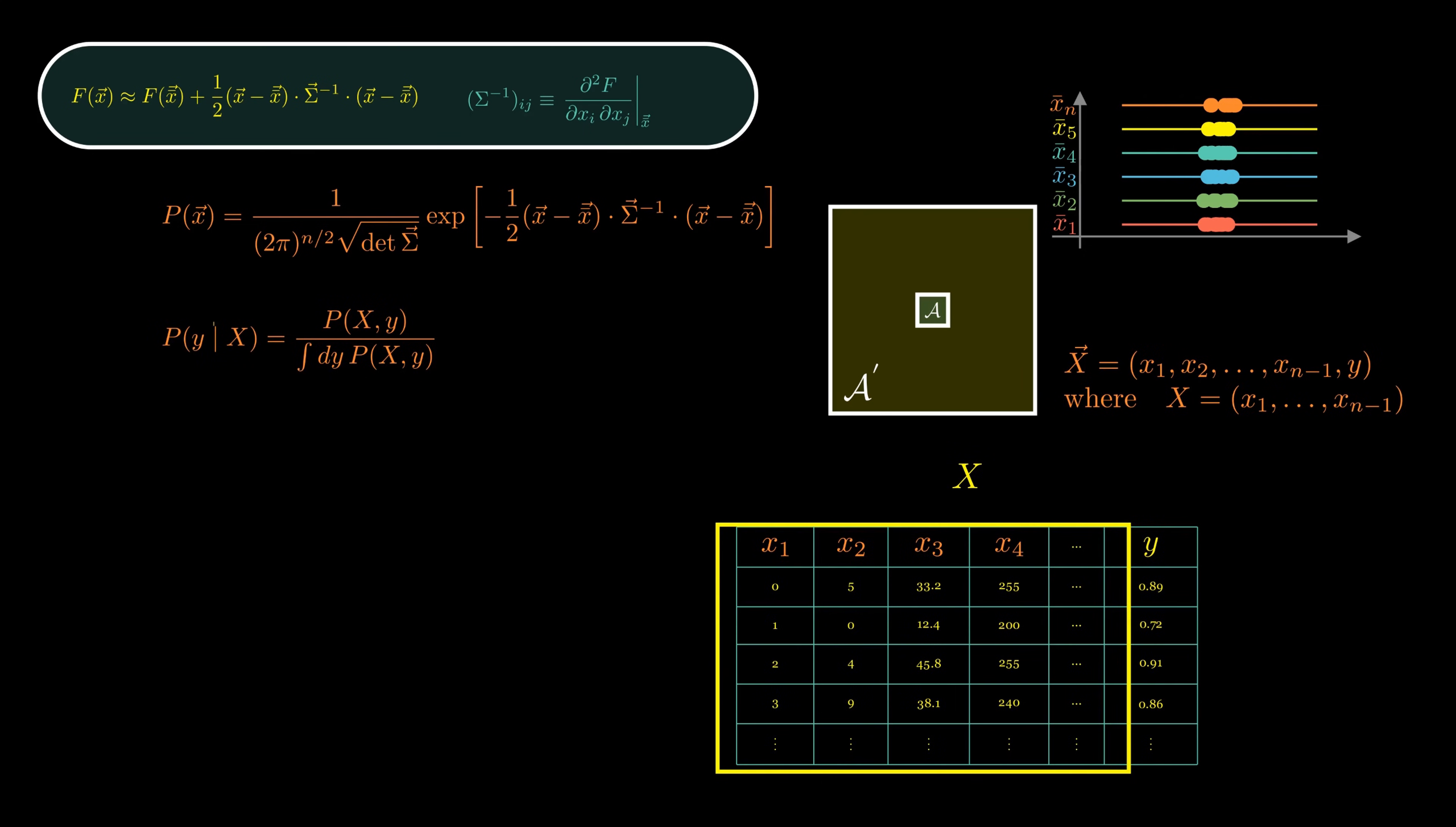Now, we want the probability of Y, provided that the values of the X are given. This is just the conditional probability of Y given X. From this conditional probability, we can compute the expected value of Y, which becomes our prediction for variable Y, which we choose to show as Y hat. And here's the beautiful part.